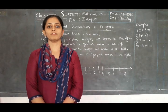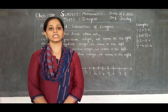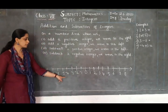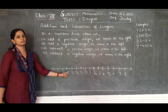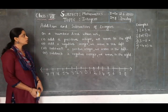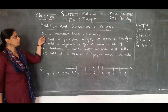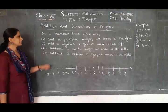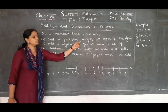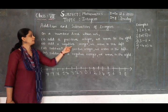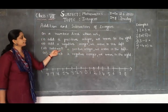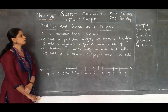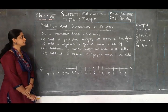Good morning, children. In the previous class, you learned about integers. Integers are numbers which include positive numbers, 0, and negative numbers. Today we will learn about addition and subtraction of integers on a number line. The rules to follow are: when we add a positive integer, we move to the right; when we add a negative integer, we move to the left; when we subtract a positive integer, we move to the left; when we subtract a negative integer, we move to the right. These are the four rules for adding and subtracting integers on a number line.